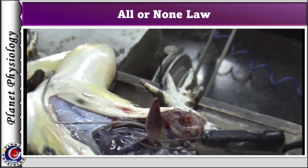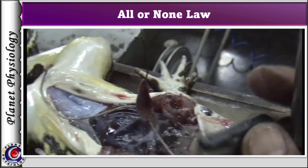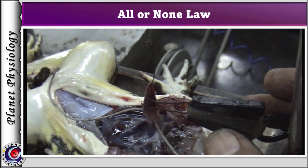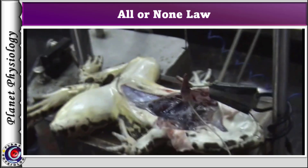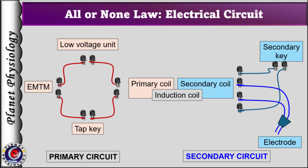Now the electrode is lightly touched to the ventricle. To prove the property of the All or None Law, we stimulate the ventricle with a single stimulus at a time by varying their intensities. We use the basic circuit with a battery, primary coil, tap key, and EMTM in the primary circuit. The secondary coil, secondary key, and electrodes are in the secondary circuit.